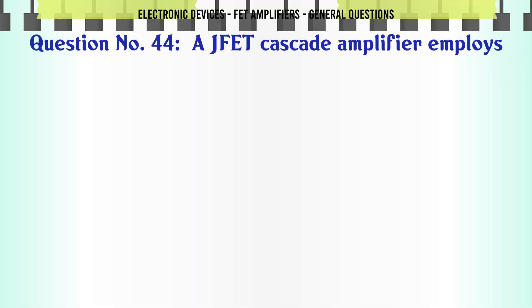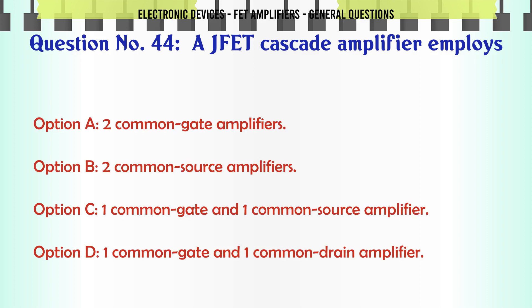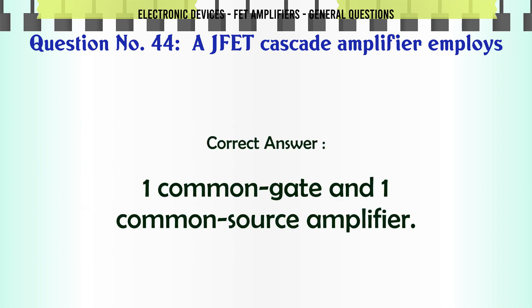An FET cascode amplifier employs: A. 2 common gate amplifiers. B. 2 common source amplifiers. C. 1 common gate and 1 common source amplifier. D. 1 common gate and 1 common drain amplifier. The correct answer is 1 common gate and 1 common source amplifier.